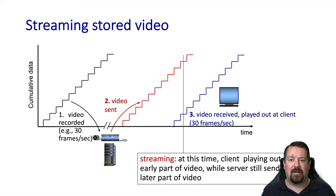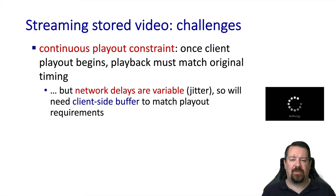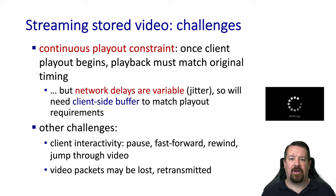At any given point in time, the client is playing back an earlier part of the video than what the server is sending out. The constraint of this system is that once the client starts playing back, the server in combination with the network has to keep up supplying additional frames. Otherwise, the client would run out of frames and stop playback. Since network delays are variable, the client needs to maintain some buffer of frames so that when the network slows down, the client has stored frames to play, and hopefully the network will speed back up and refill the buffer. The larger the buffer the client maintains, the longer the user will have to wait before playback can start. Features like pausing, fast forwarding, and rewinding also cause the need for rebuffering.